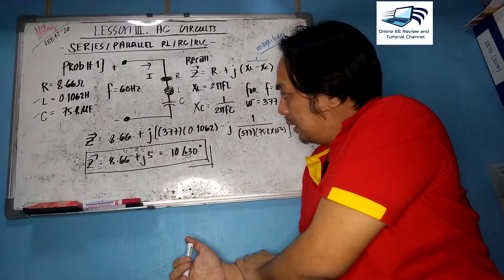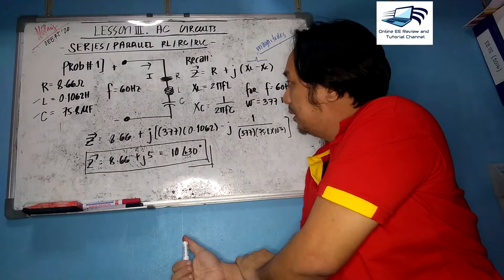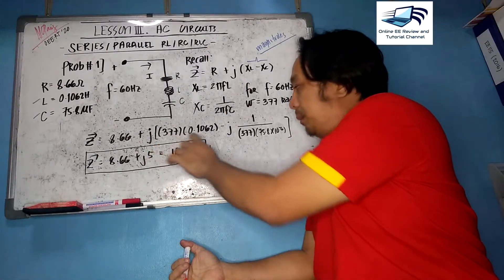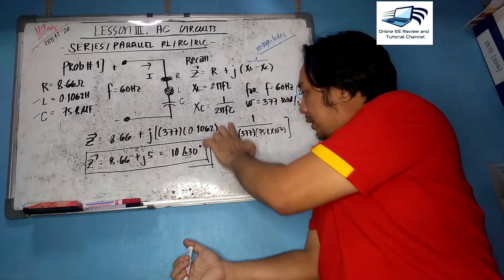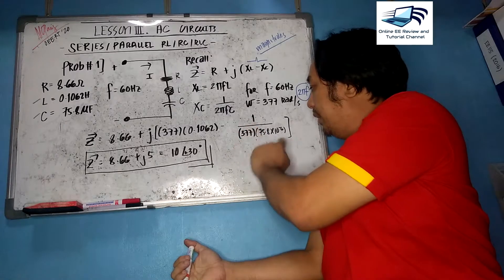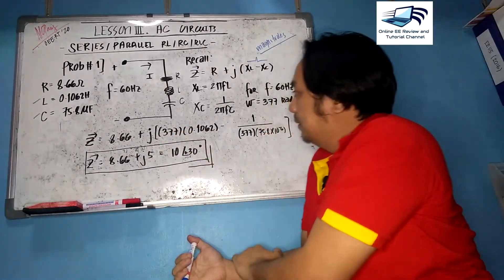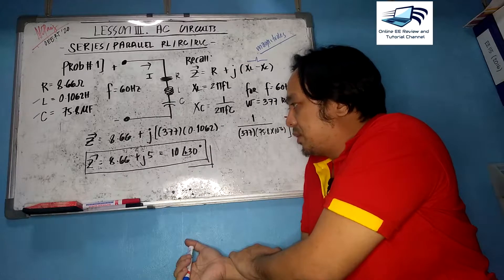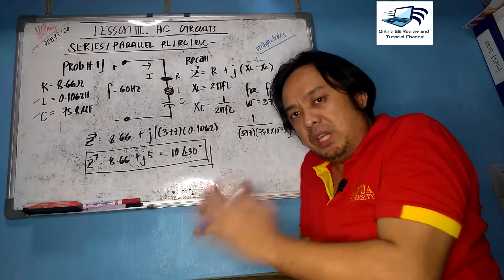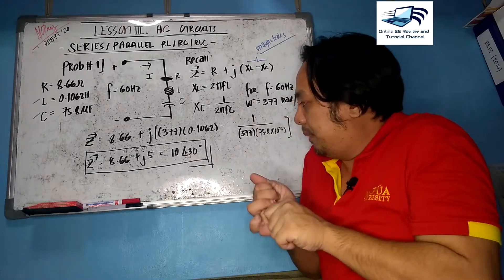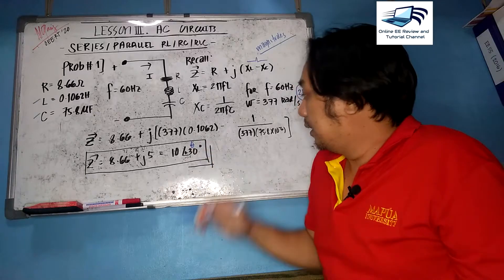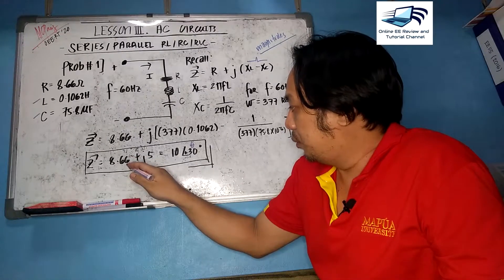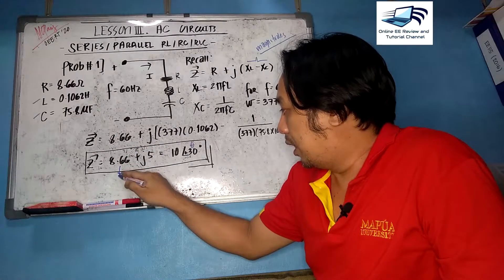So Z equals 8.66 plus j times 377 multiplied by 0.1062, then subtract the capacitive reactance XC. Computing this with a calculator gives the impedance as 8.66 plus j5, which equals 10 at 30 degrees in phasor form. The phasor value 10∠30° corresponds to the magnitude and the complex form shows R and total reactance X.